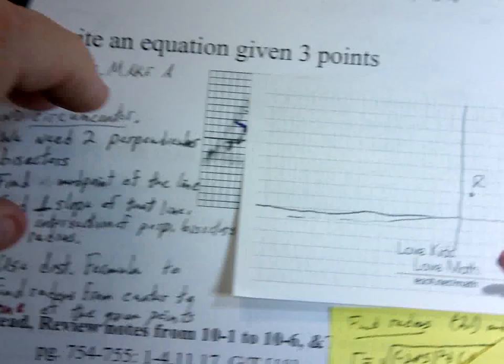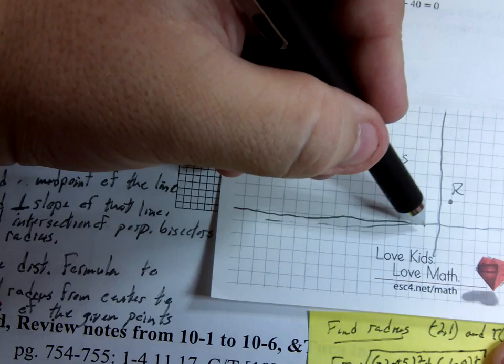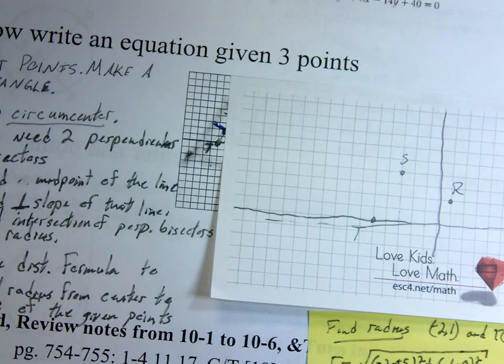So first, R is at 1 comma 2. Okay, where's S? Negative 3 comma 2, 3, 4. Okay, there's S. And where is T? Negative 5 comma 0. Okay, so those are the three points.